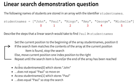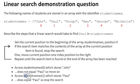Applying this to the question: we access student names at position 0, which is the beginning of the array. This stores John, which is not a match. We then move to position 1. This stores Paul, which is a match, so therefore we stop the linear search.